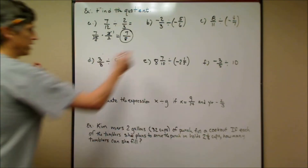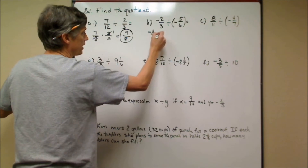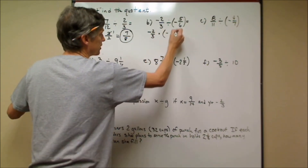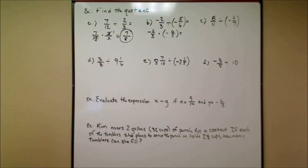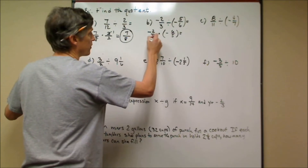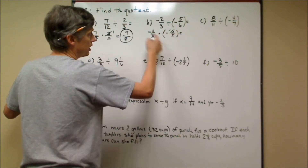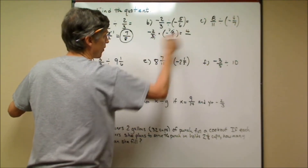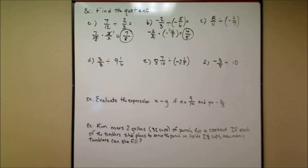The next example divides two negatives, so the result will be positive. Multiply by the reciprocal, which is negative 6/5. After inverting to multiply, look for cross canceling: 3 goes into one number once and the other twice. Negative times negative is positive, giving 2 times 2 = 4 over 1 times 5 = 5. The answer is positive 4/5.